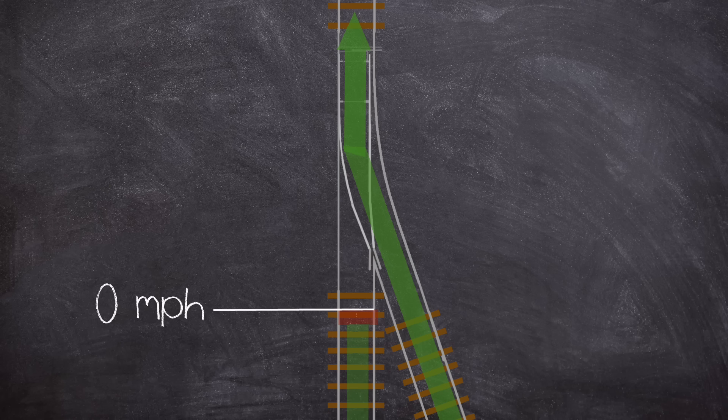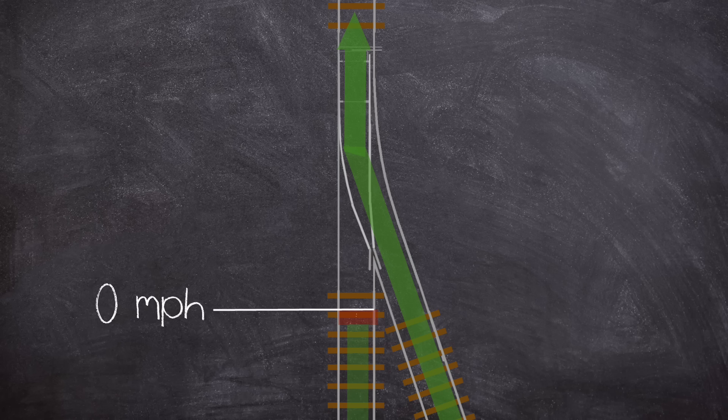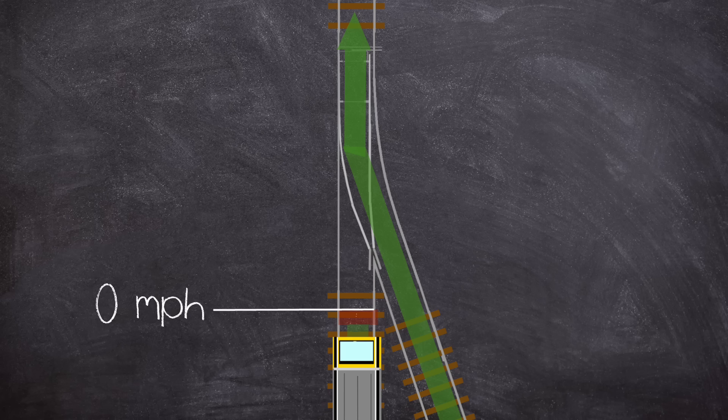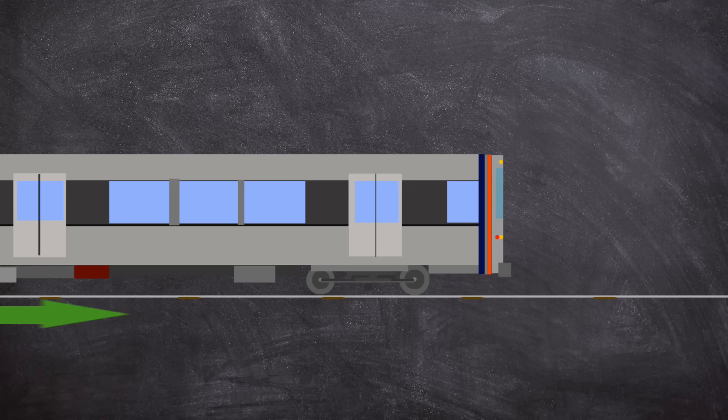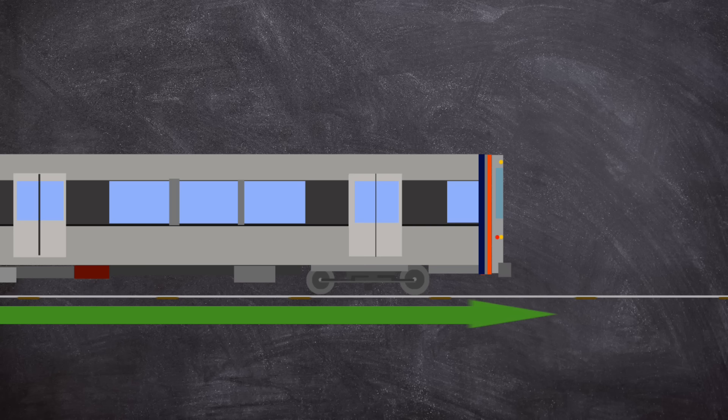The ATC system will give the maximum speed a train can run to. If the next block is occupied, it will be a speed of 0 mph. The system also considers any diverging or converging sets of points. The speed signal is transmitted via the rail from the train control room. This system is meant to be failsafe. If the train loses its speed code, it will default to zero and stop the train.